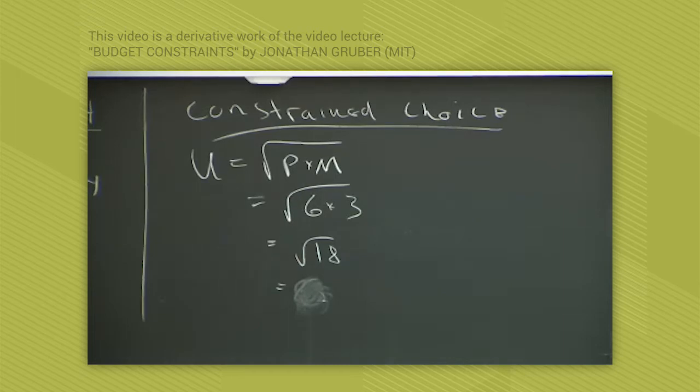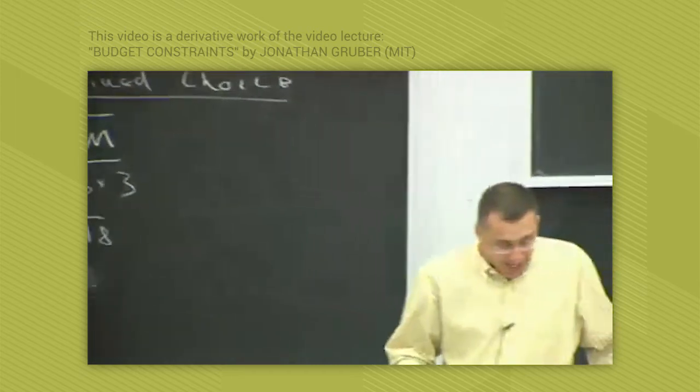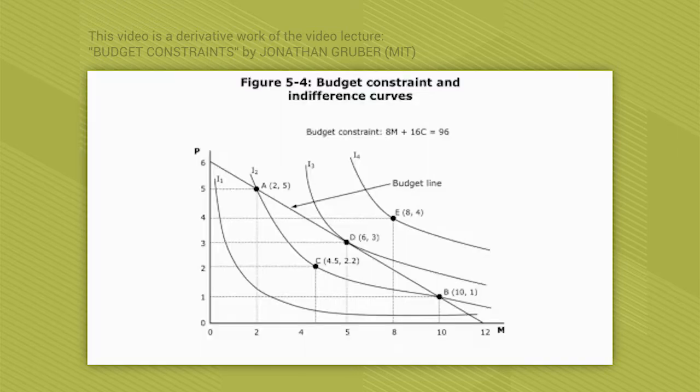Let's talk about why that's the best point for you. Let's think about some alternative points. For instance, why is that better than point E? Why is it better than point A? Point A you can afford. So why is point D better than point A? So it's true you can afford point A, but you're on a lower indifference curve. Utility is a lower value, it's only square root of 10. So point A is dominated by point D.